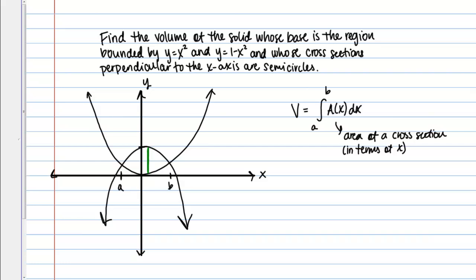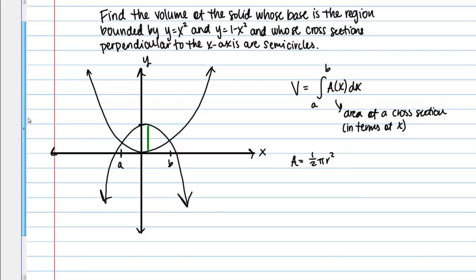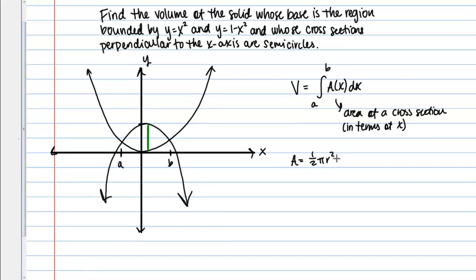So then what we need to do is we need to actually find the area of one of those cross sections. So my cross sections are semicircular, so I know that in general that the area of a semicircle is pi R squared divided by 2. So 1 half pi R squared, just half the area of a regular circle. So what I need to do then is I need to determine what R is.